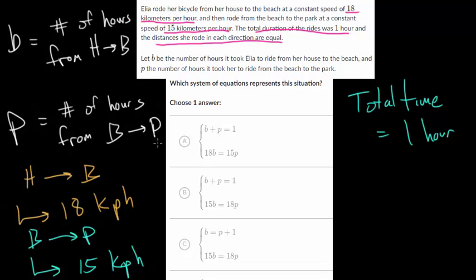Since they're the same distance, we know that since she was going faster from the house to the beach, she's going to finish that in a shorter amount of time. So we know the total time is one hour, and maybe she'll spend 28 minutes on this first ride, and then 32 minutes from the beach to the park. What we're trying to do is find out those exact times. But in this problem, we're not actually going to solve the system. We just want to come up with the equations.